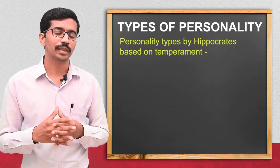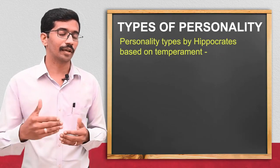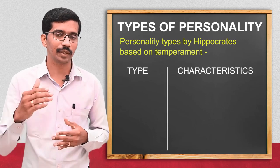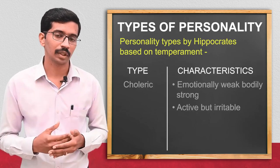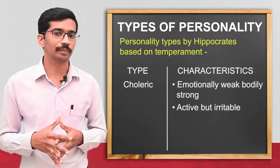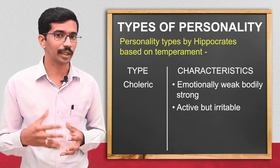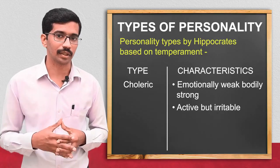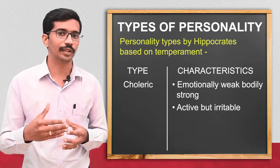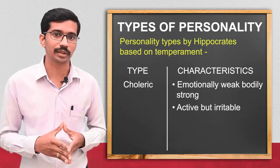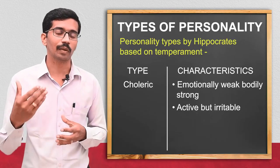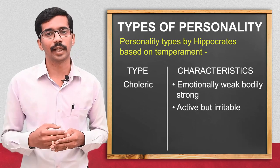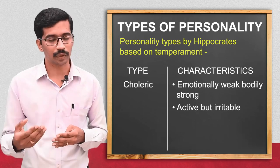Now we move to the types of personality. There are different types of classifications; we will go through the major ones. The first classification is given by Hippocrates, who classified personality based on the temperament of the person. It may be the choleric type, melancholic type, phlegmatic type, and sanguinic type.